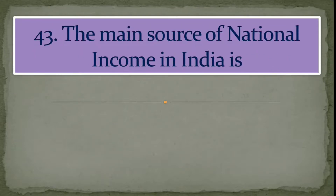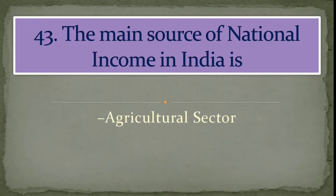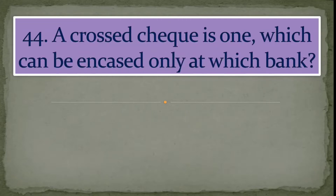Question number 43: The main source of national income in India is? Answer: agriculture sector. Question number 44: A crossed check is one which can be encashed only at which bank? Answer: SBI, State Bank of India.